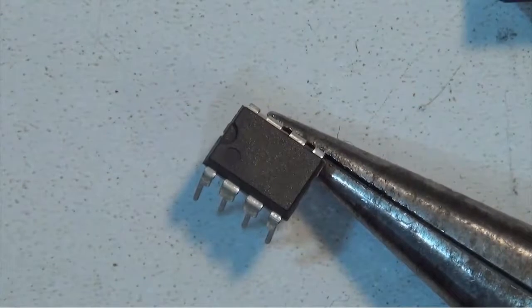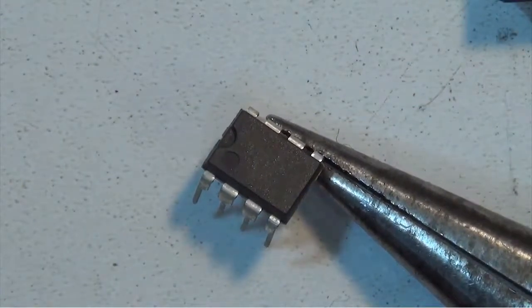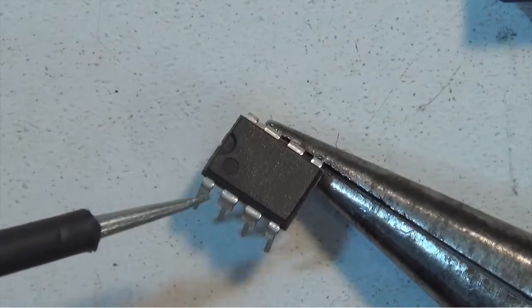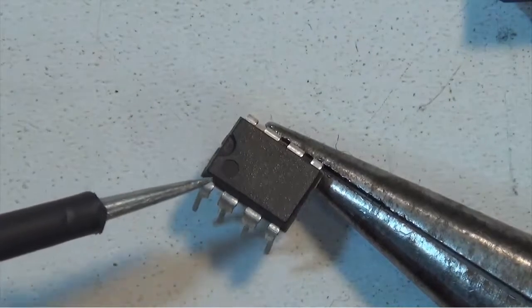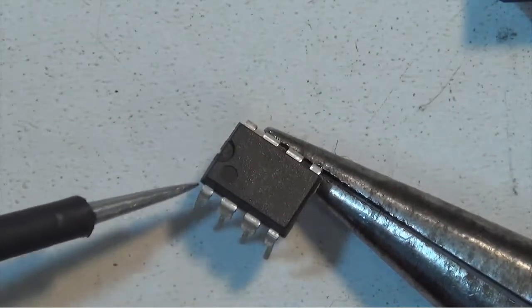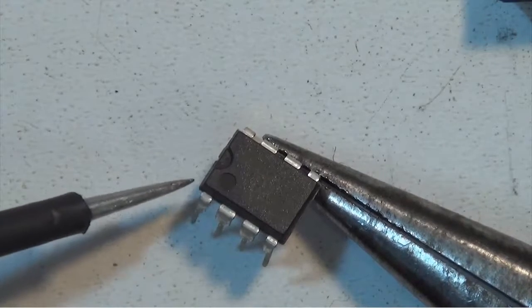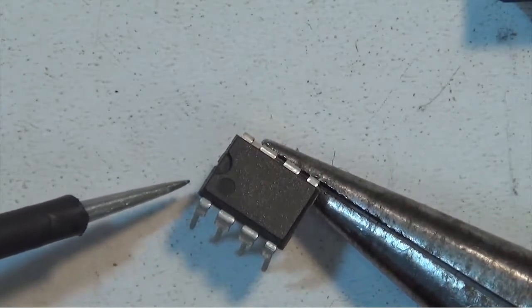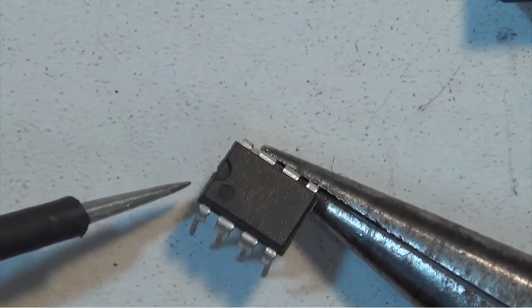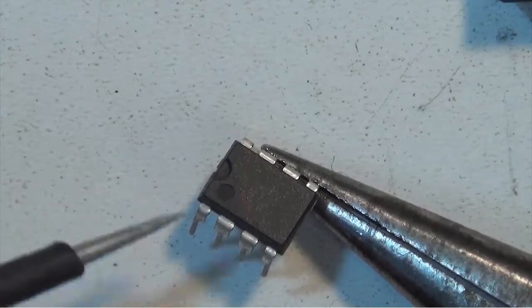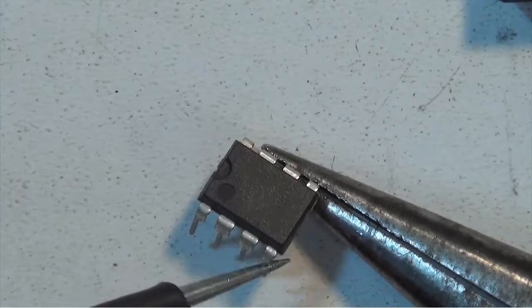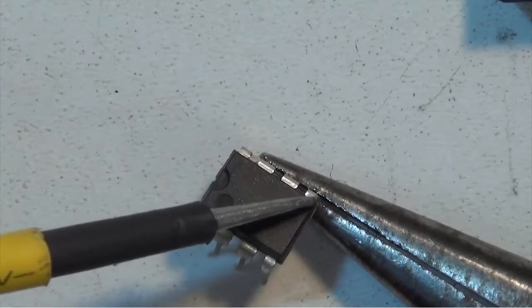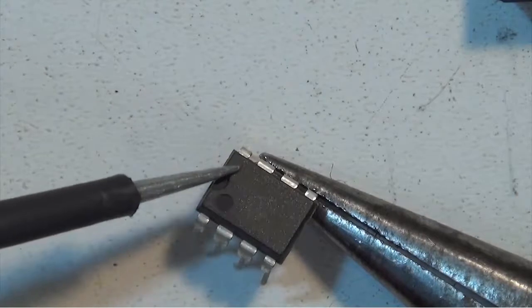This IC has identified it two ways. We have the notch on the left side here and then we also have a dot indicating pin 1. So this pin here on the left side, lower left pin, is going to be pin 1. So if we're counting the IC pins, this will be 1, 2, 3, 4, then we go up to the back, 5, 6, 7, 8.